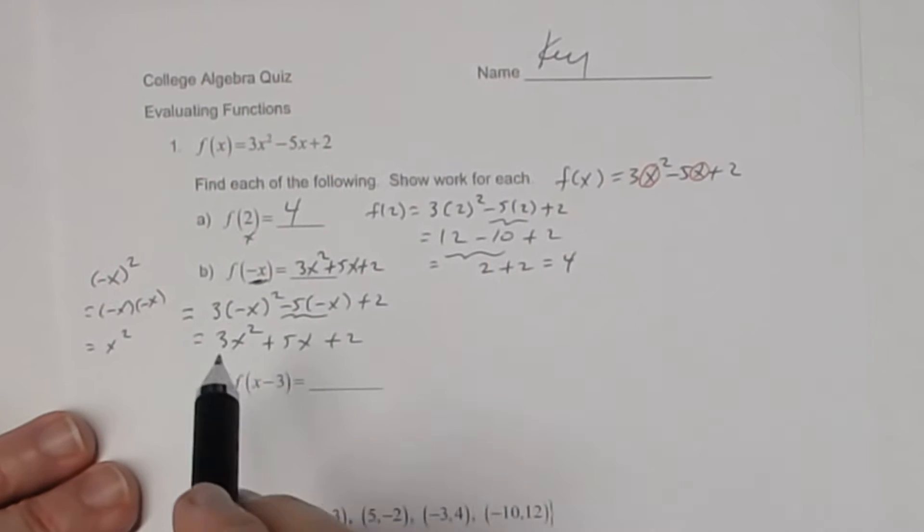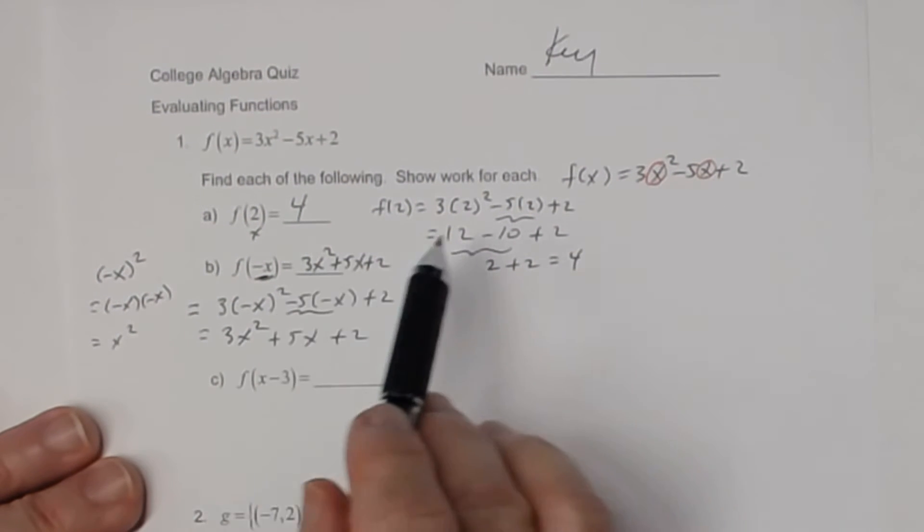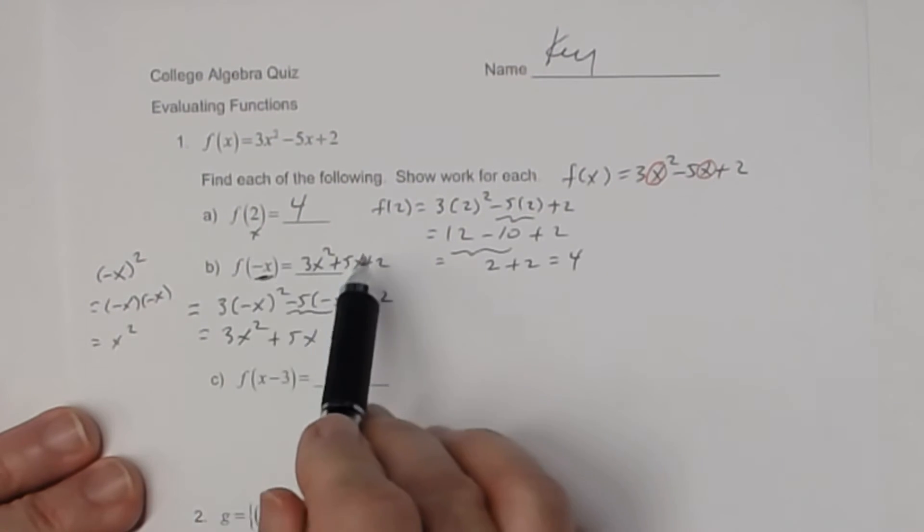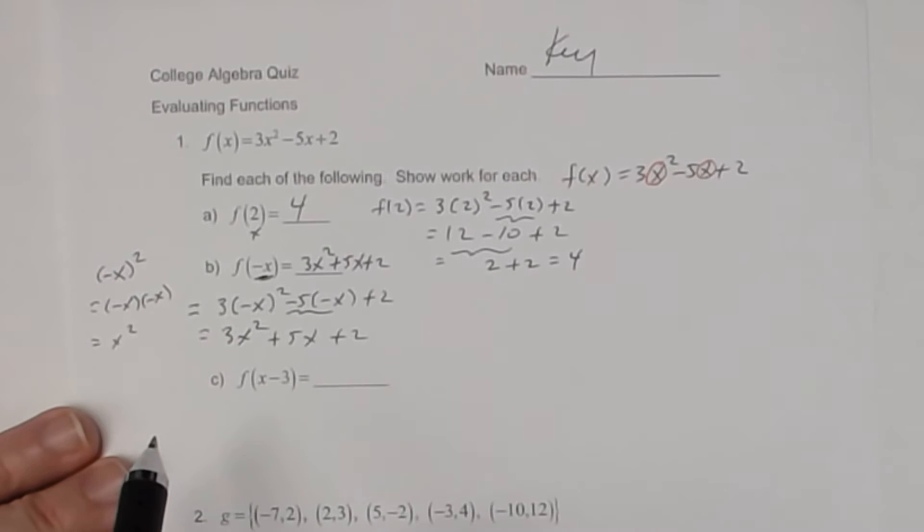So f of negative x is equal to 3x squared plus 5x plus 2. Whenever you evaluate a function at a variable, you're going to end up with a variable expression.